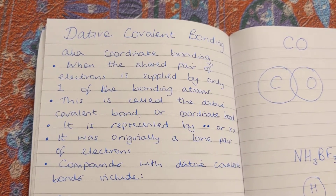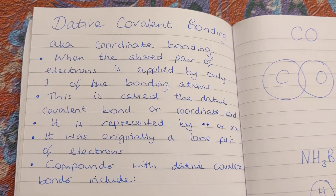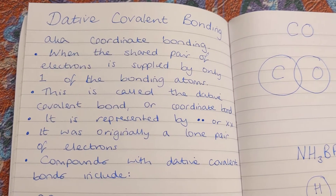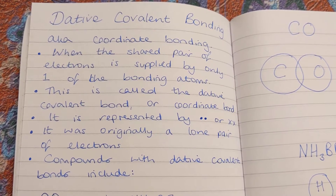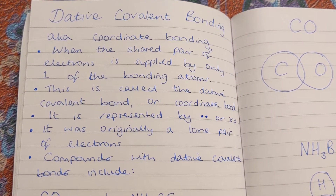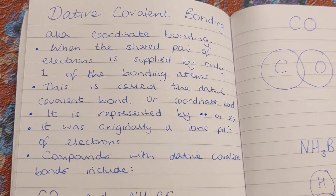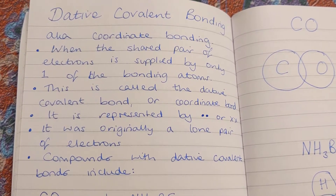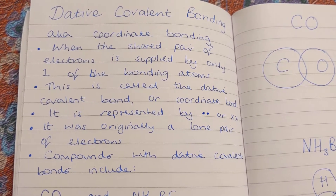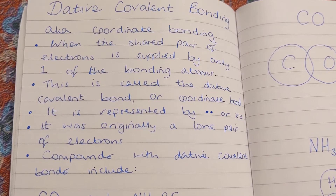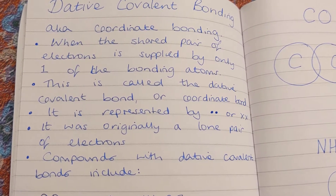In this video I'm going to talk about dative covalent bonding. It's also called coordinate bonding, and it happens when the shared pair of electrons — it's a type of covalent bonding — is supplied by only one of the bonding atoms. Normally in a single bond, each atom donates one electron, but in this case one atom supplies both electrons of that pair and the other just takes them and shares them.